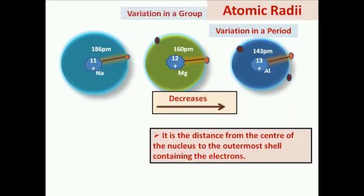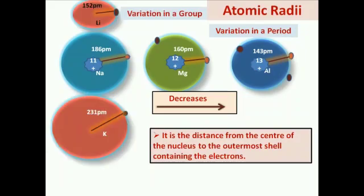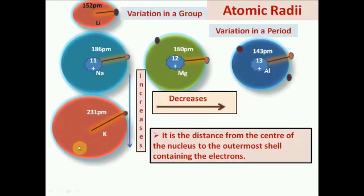Now, what is the trend in a group? If we move from top to bottom in a group, the atomic radius increases, because each time electrons are added into a new shell, so atomic radius increases.